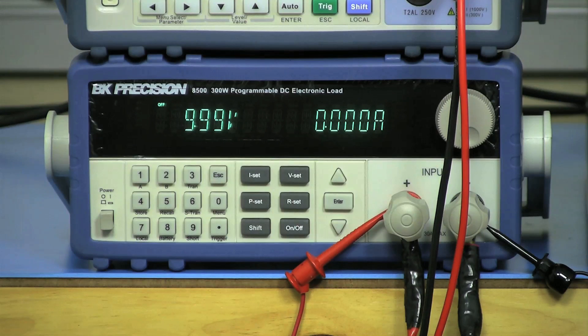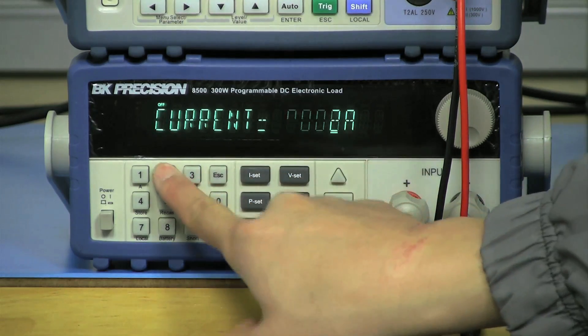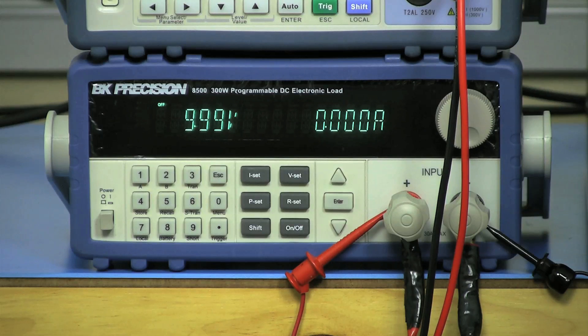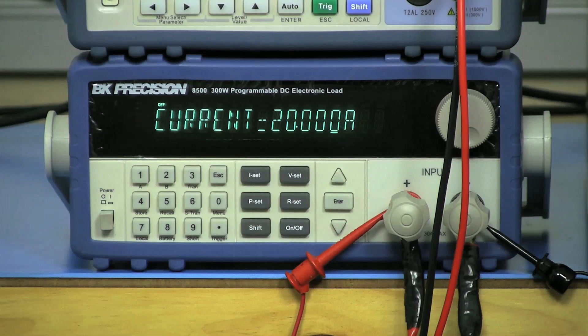Now I will set up the 8500 as a constant current load with 20 amps. Press the ISET button and type 20 and press enter to save. The load should be configured to sink 20 amps. You can press ISET again to verify.